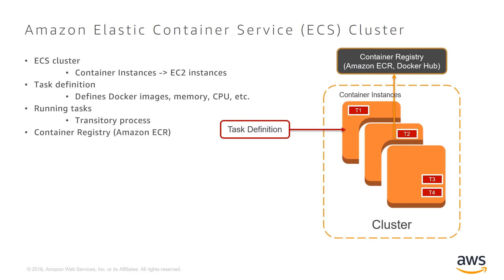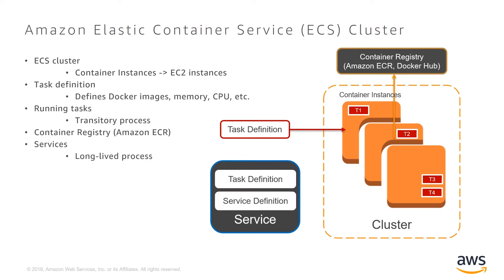When the task starts up, it will download the Docker image from the container registry, whether that is Docker Hub or Amazon Elastic Container Registry, or ECR for short. Another way to run your containers is as a service. This is for things like web servers, where you want the task to run indefinitely. A service will run a declared number of tasks and will monitor their health. If any of the tasks fail, it will restart new tasks.